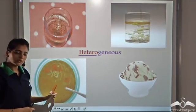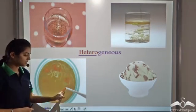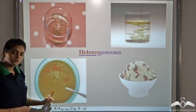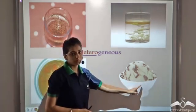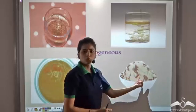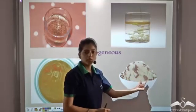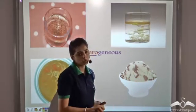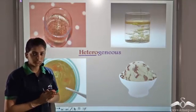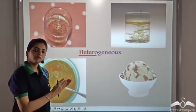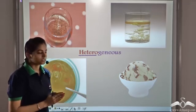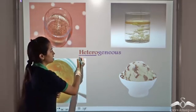Similarly, noodle soup — we see that it is not constant or uniform throughout. And if you have a chocolate chip ice cream, you see that in some parts there is more of choco chip, in some parts there is more cream and so on. So when you are able to make out the difference in the different proportions of the substance, such substances are heterogeneous.